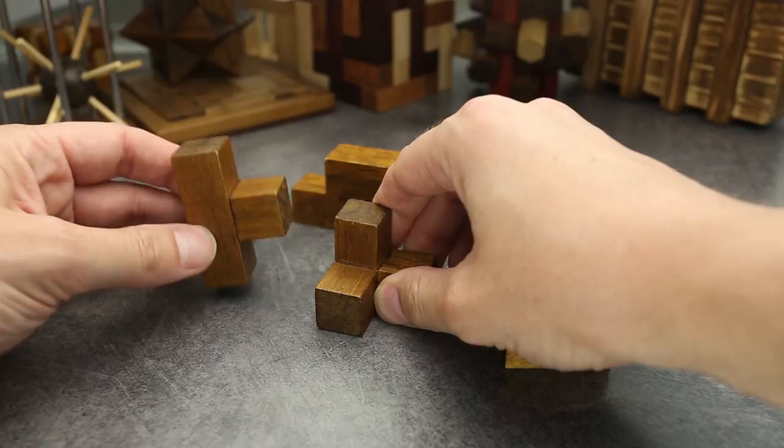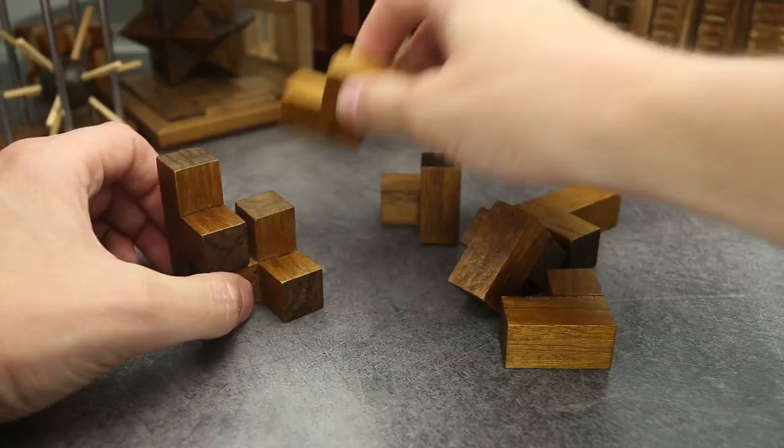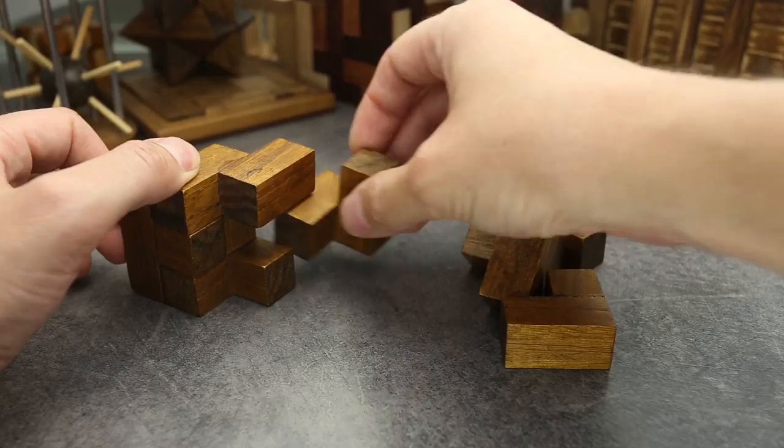First you have to take this piece. This piece, by the way, has the name T. And this piece is called P. This one has the name Z. This piece is called B.